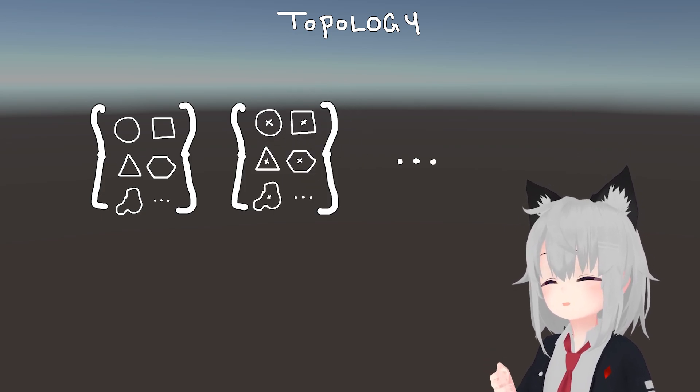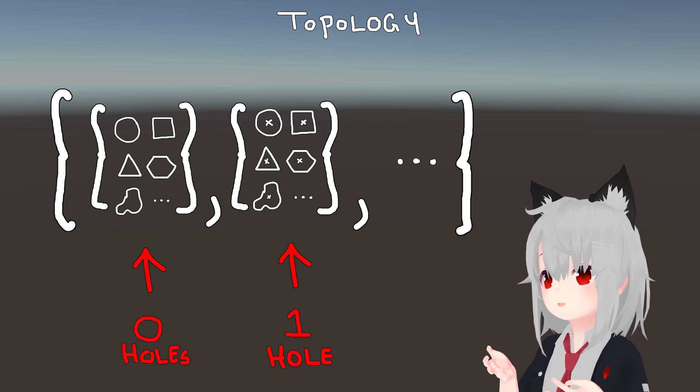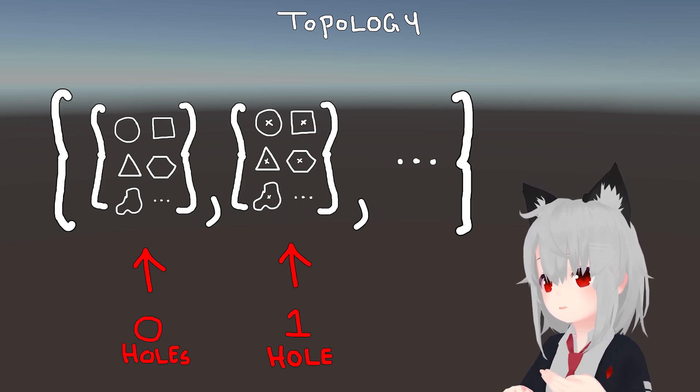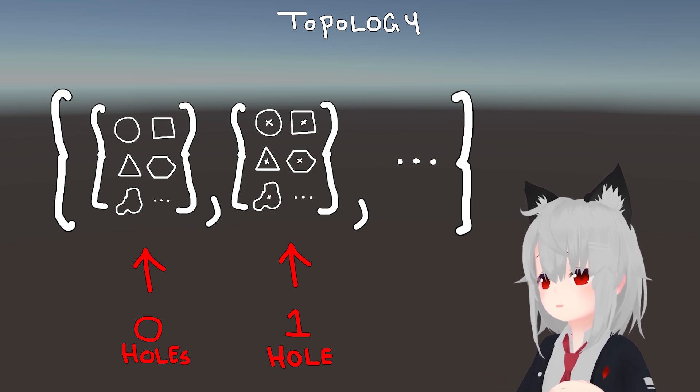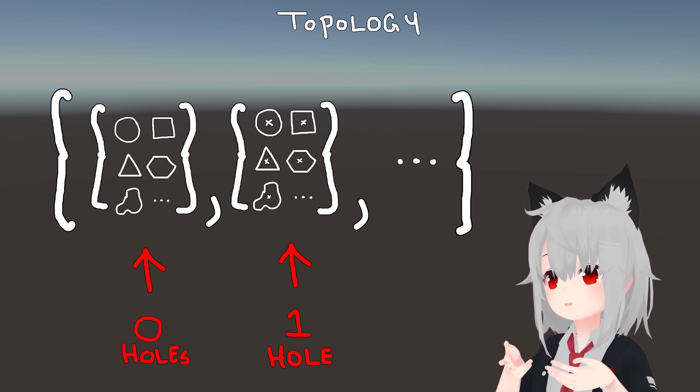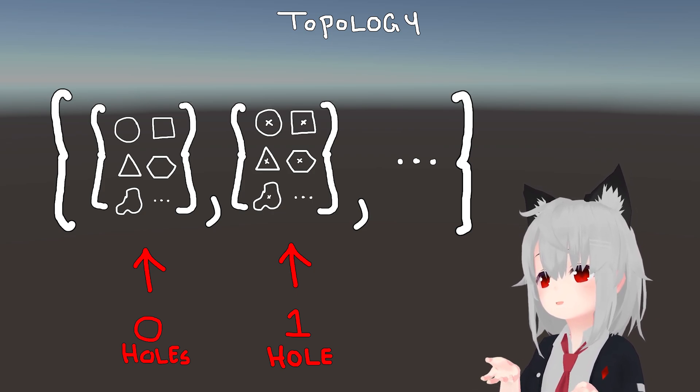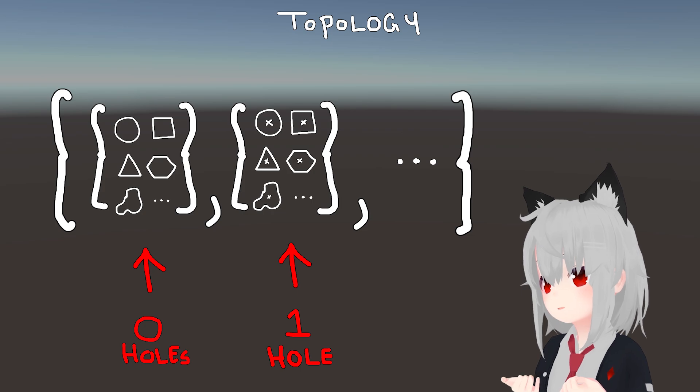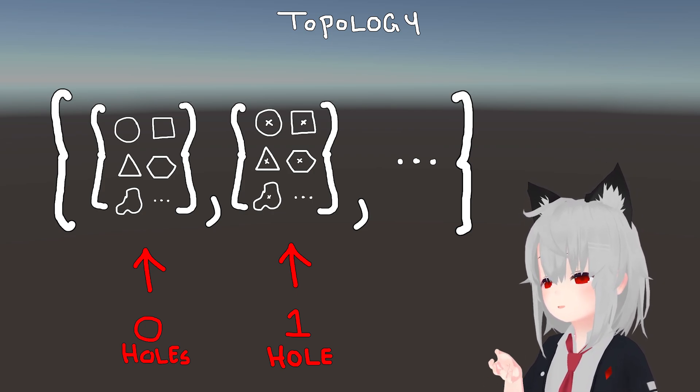Now, you can repeat this procedure for 2 or 3 or an infinite number of holes, ultimately giving you a set whose elements are characterized by an integer, representing the number of holes inside the shapes. Now, this integer is called the topological invariant of the shapes, and it can be shown quite generally that there always exists a bijective mapping between the set spanned by this topological invariant, in our case the integers, and the set of topological equivalency classes.